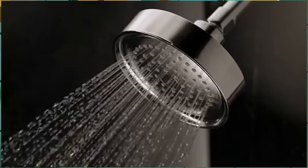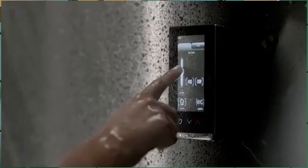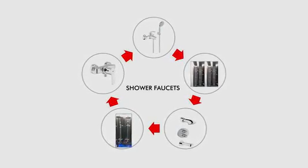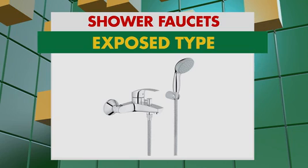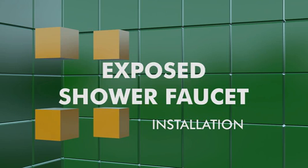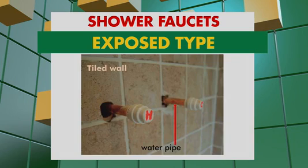Showering is fun, lalo na kung ang shower na ginagamit natin ay fit sa ating pamilya. Ang shower faucets na available sa Wilcon ay may dalawang klase: ang exposed shower faucets at ang concealed shower faucets. Ang exposed shower faucets ay madali lang ikabit, dahil ang nakalabas lang dito ay ang inlet ng hot and cold water pipe niya sa tiled wall ng shower area.